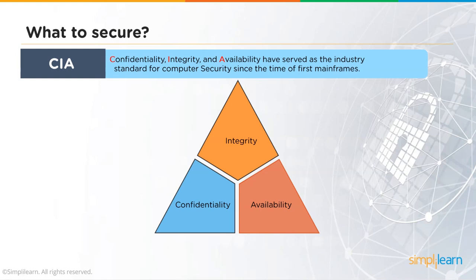Integrity means keeping data trustworthy. Even authorized users should not be able to change data in an unauthorized or unintentional manner without it being audited. Mistakes can alter data in ways that make it stop making sense. Integrity ensures that when consumers access data, they can trust it is valuable and correct. Availability means that while keeping data confidential with integrity intact, we must still ensure the data is accessible to all authorized users whenever they need it.